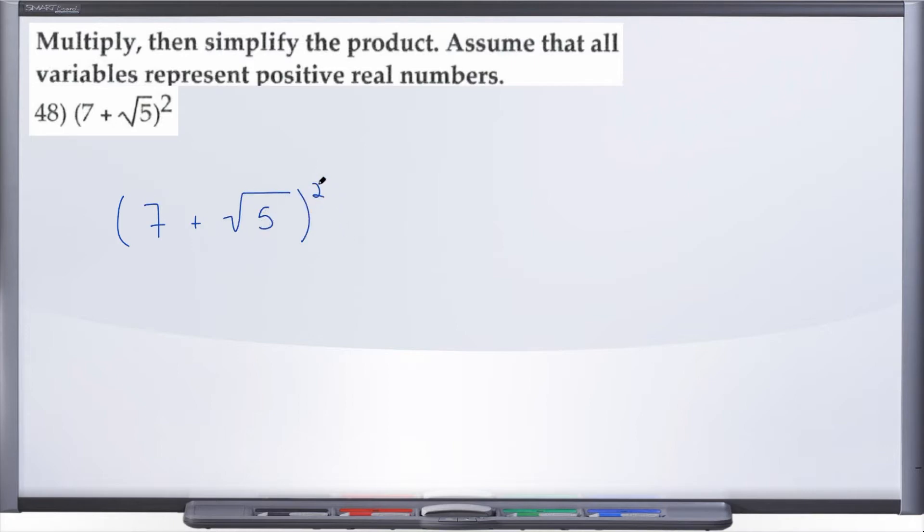And when you see this square, what does it mean when we want to square something? Well, what it means is we're going to write it out twice, especially in this case when we are dealing with a binomial. Let's write it out twice.